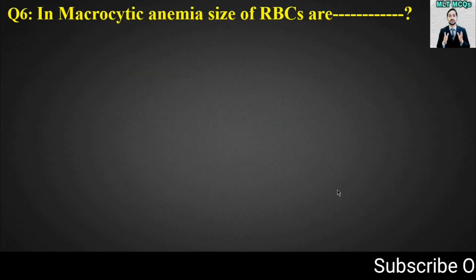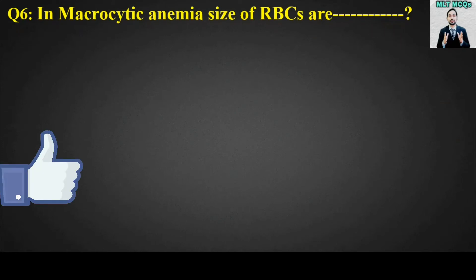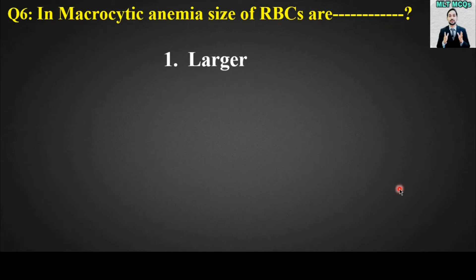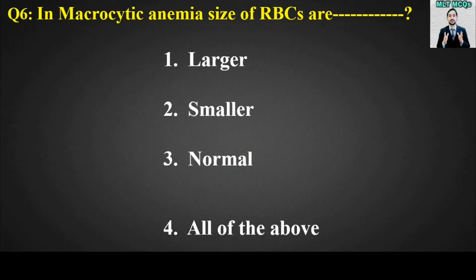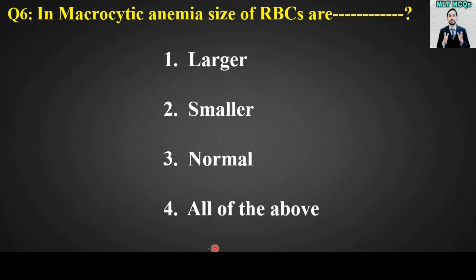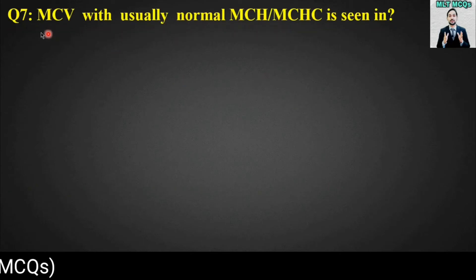MCQ number six: In macrocytic anemia, the size of red blood cells is blank. Options are: larger, smaller, normal, or all of the above. The right answer is option number one — larger. In macrocytic anemia, the size of red blood cells is larger.